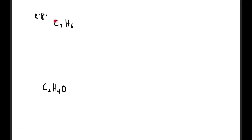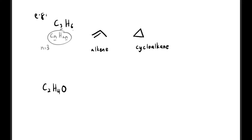Let's look at the first example: C3H6. This matches the general formula CₙH₂ₙ where N=3, since 2×3=6. So we can draw it as an alkene — a 3-carbon chain with a double bond — or as a cycloalkane with 3 carbons. Checking the hydrogen count on the alkene: 2 at one end, 1 in the middle, 3 at the other end gives C3H6. The cyclopropane also has 3 carbons and 6 hydrogens. Both are confirmed as C3H6.